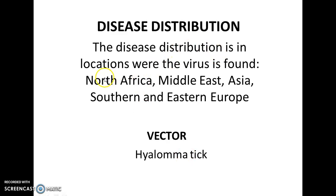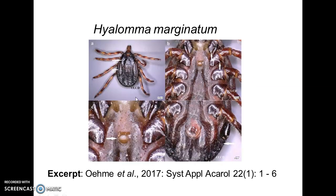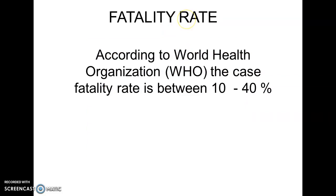The disease is found in locations where the Hyalomma tick vector is present. It has been observed in North Africa, the Middle East, Asia, and southern and eastern Europe. This is a picture of what the Hyalomma tick, which carries the virus that causes Crimean Congo Hemorrhagic Fever, looks like.